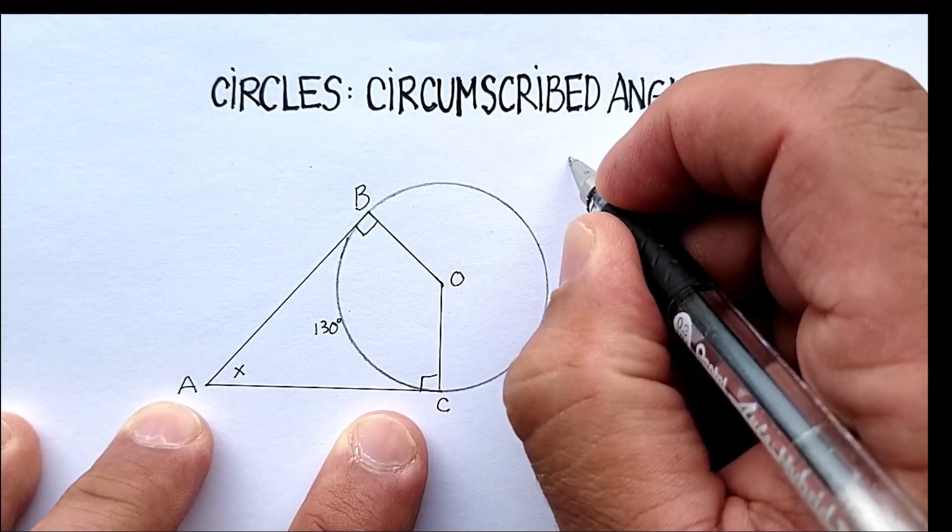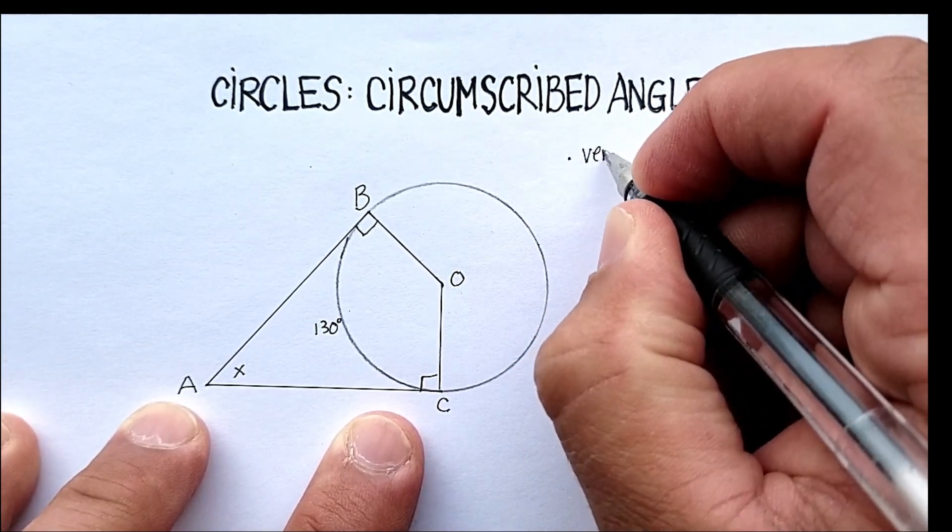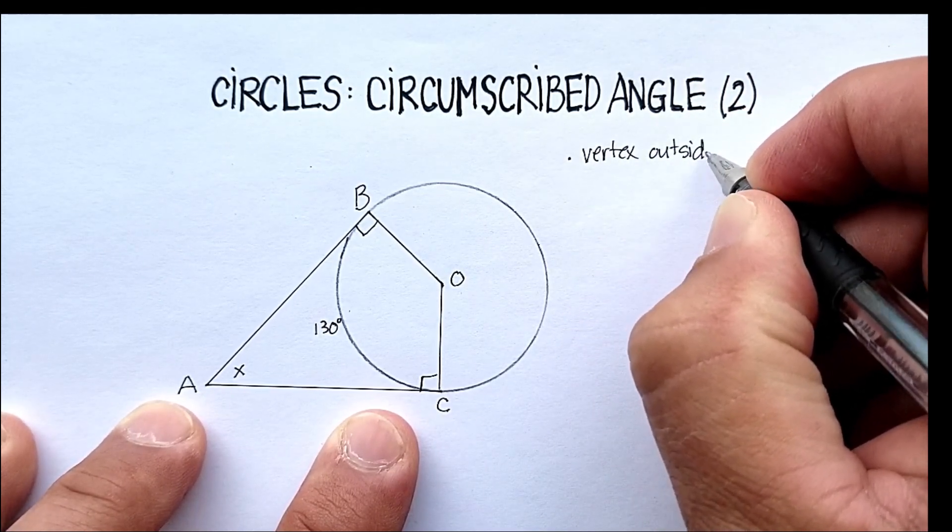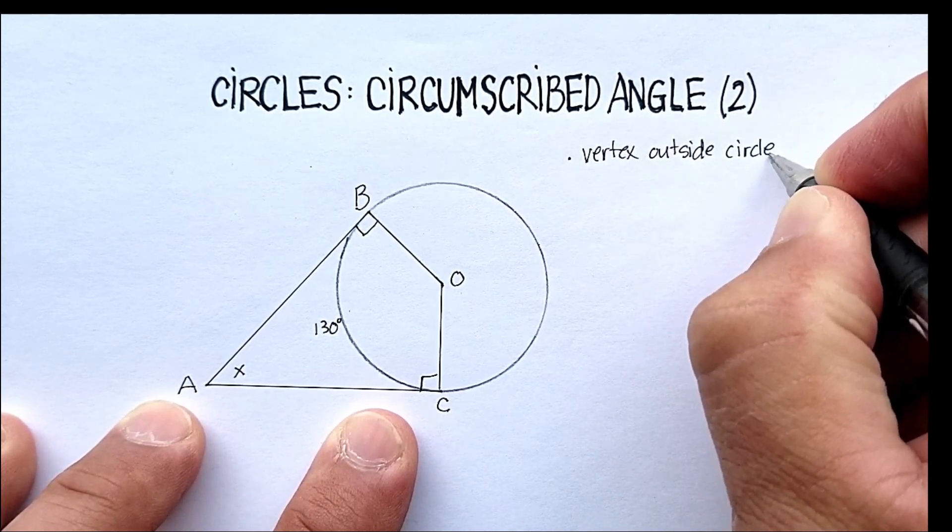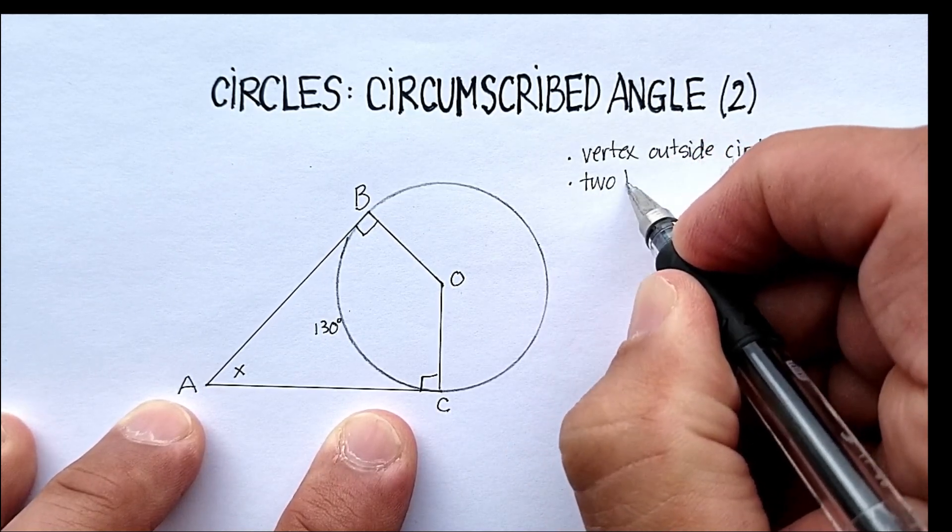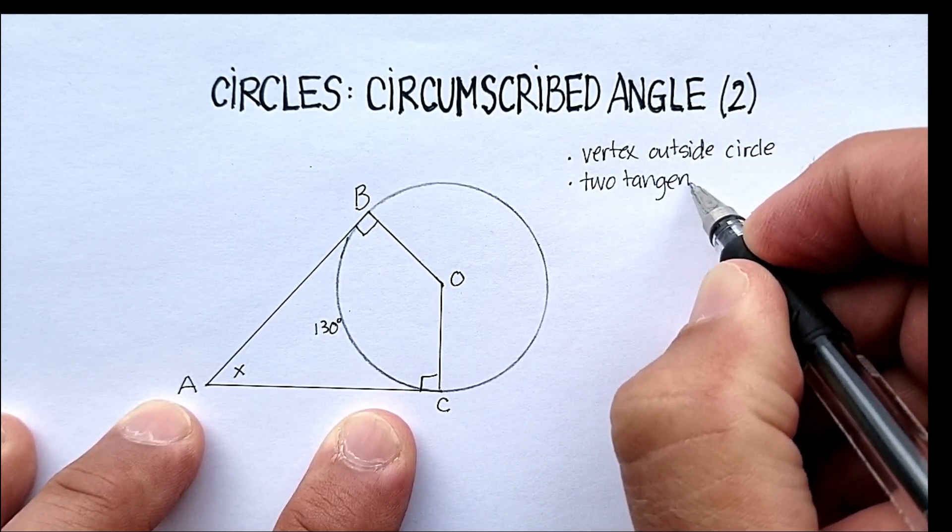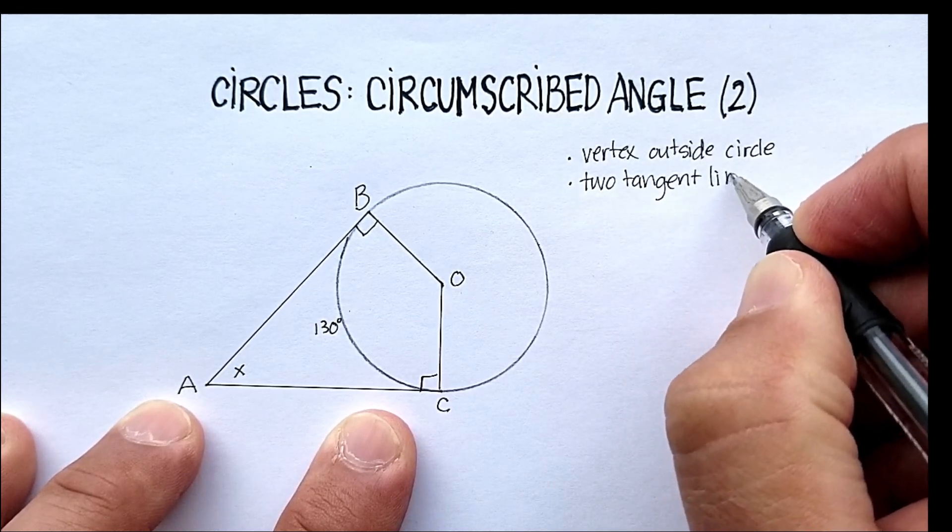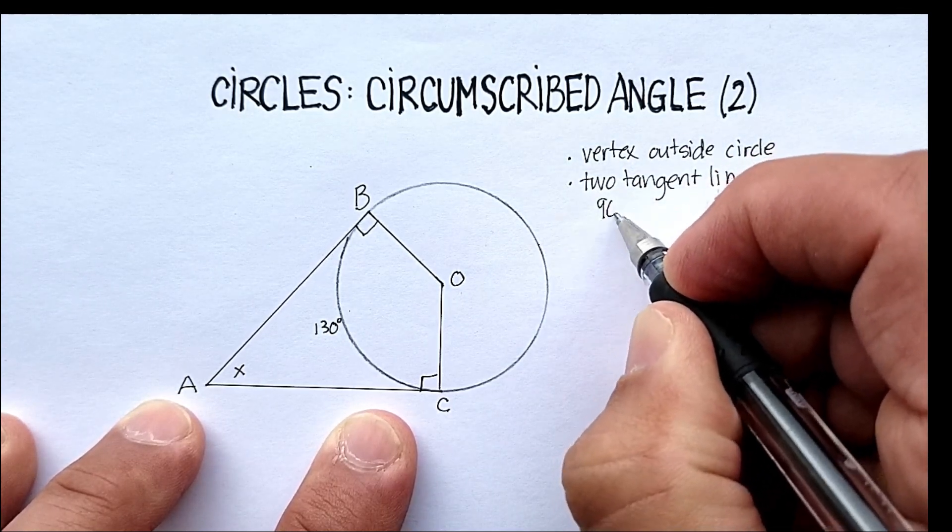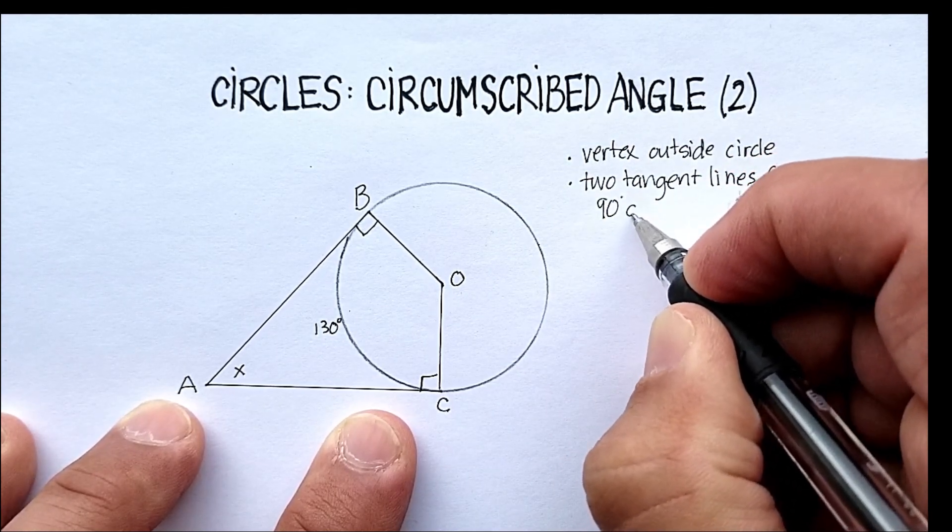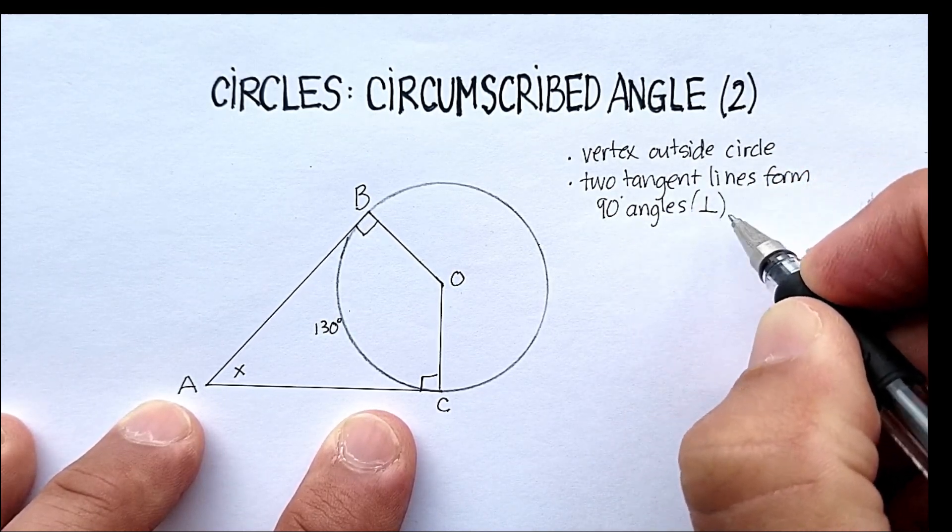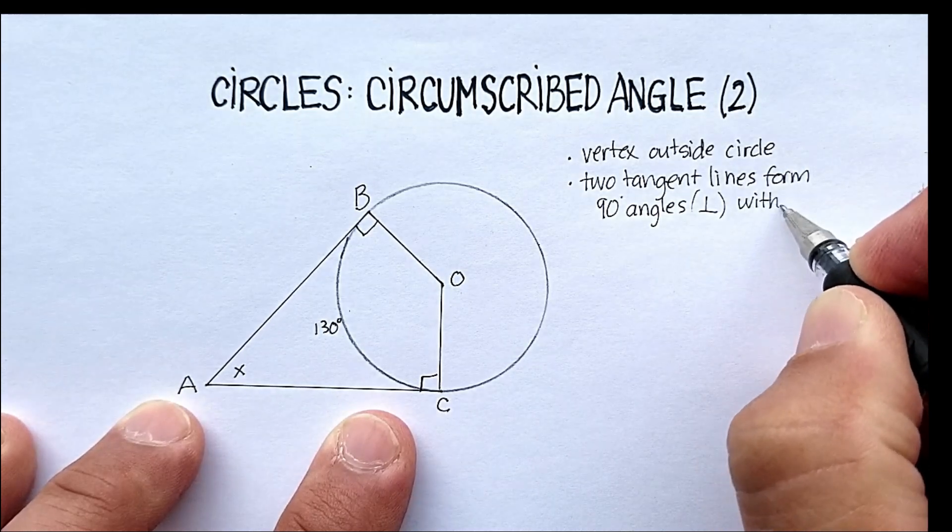Let me just write all that down again. First property, vertex outside circle. Very important. Second property, two tangent lines. Which form 90 degree angles or perpendicular angles. Remember that's a symbol for perpendicular with the center point.